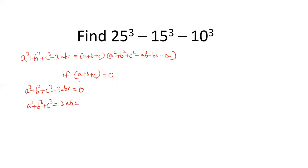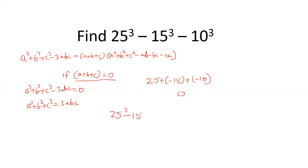That means if a plus b plus c is 0, then a cube plus b cube plus c cube equals 3abc. In this case, if you check 25, negative 15, and negative 10, you will find that their sum is equal to 0. So a cube plus b cube plus c cube equals 3abc, meaning 25 cube minus 15 cube minus 10 cube equals 3 times 25 times 15 times 10.